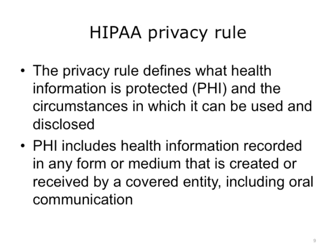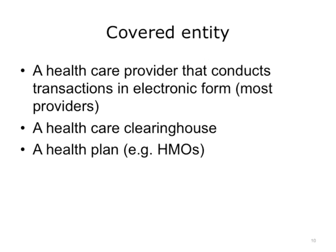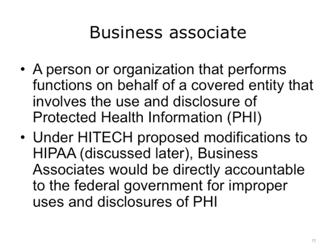It is especially important for public health agencies to determine when they are covered by HIPAA. The first step is to assess if they are a covered entity — meaning if they are health care providers who treat patients. Generally, if the agency is a health care provider and transmits data electronically, they will be considered a covered entity. A business associate performs functions on behalf of a covered entity. Changes proposed under the HITECH Act would allow the Office of Civil Rights to hold business associates directly accountable to the security rule and use and disclosure provisions of the privacy rule. Currently, business associates are accountable only to covered entities through a business associate agreement.